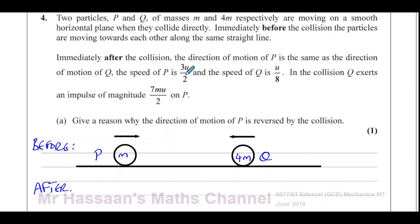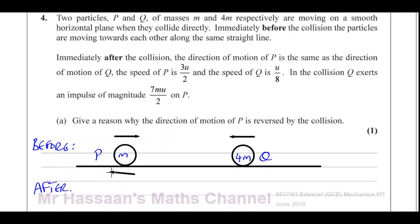Of course, if the speed of P is greater, then P must have been reversed, because if it's traveling faster than Q, it can't be going behind Q. It can't be that Q has been reversed because its speed is less than the speed of P. So if their direction has been reversed, P must be going this way — that's the reason I'm going to write.